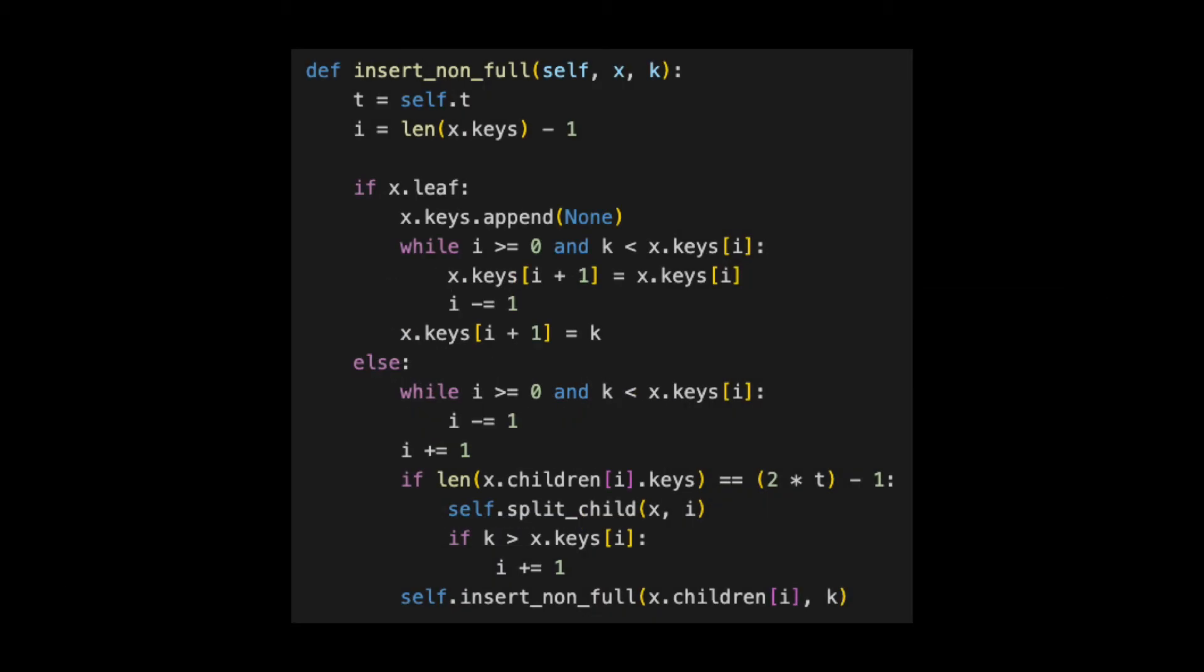Notice there are two main sections based on whether the node is a leaf. We insert the key into a leaf, as shown here. I'm going to only show the top part of the code for now, and let's walk through an example.